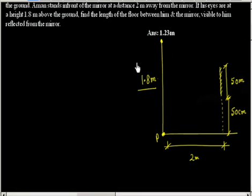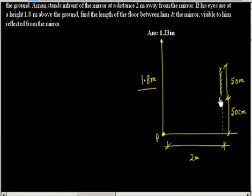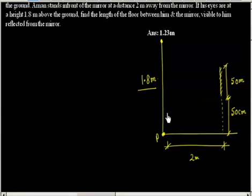We have to calculate the length of the floor that is visible to this person. Two critical rays will be used: one ray comes through the lower end of the mirror and reflects to one side, and another ray comes from the upper end and reflects back. From these, we can find the length of the visible floor. Let us first discuss the lower ray.